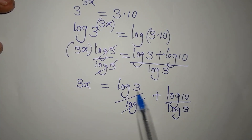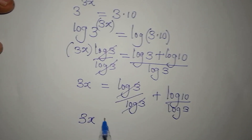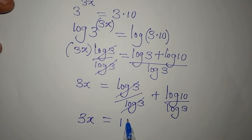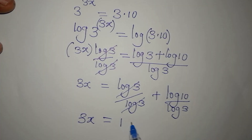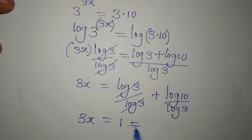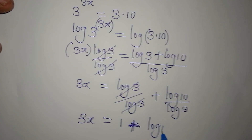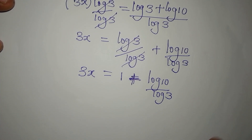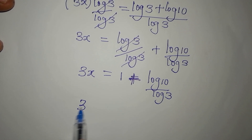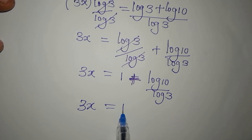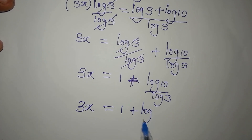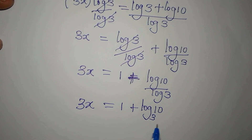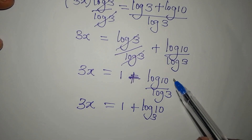Log 3 divided by log 3 gives us 1, so 3x equals 1 plus log 10 over log 3. By the change of base rule, log 10 over log 3 is the same as log base 3 of 10. So 3x equals 1 plus log base 3 of 10.